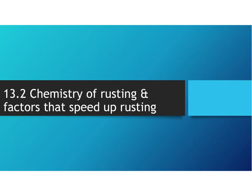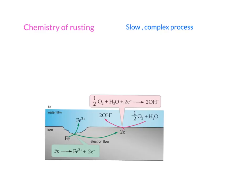In section 13.2, we're going to learn the chemistry of rusting and see what factors can speed up rusting. Rusting is a slow, complex process, meaning it involves many steps and takes a long time to produce the final product.